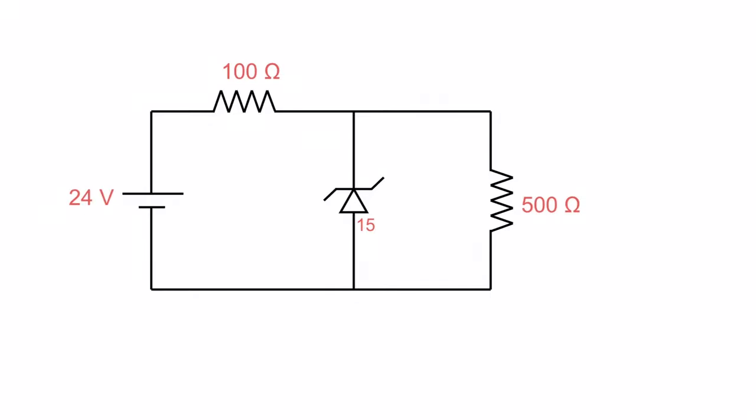Well with 24 volts on it, this guy is going to block 15 volts and put 15 volts across the 500 ohm resistor, and the remainder of it is going to go across the 100 ohm resistor. So I have 15 volts across my load and end up with 9 volts across my 100 ohm resistor.